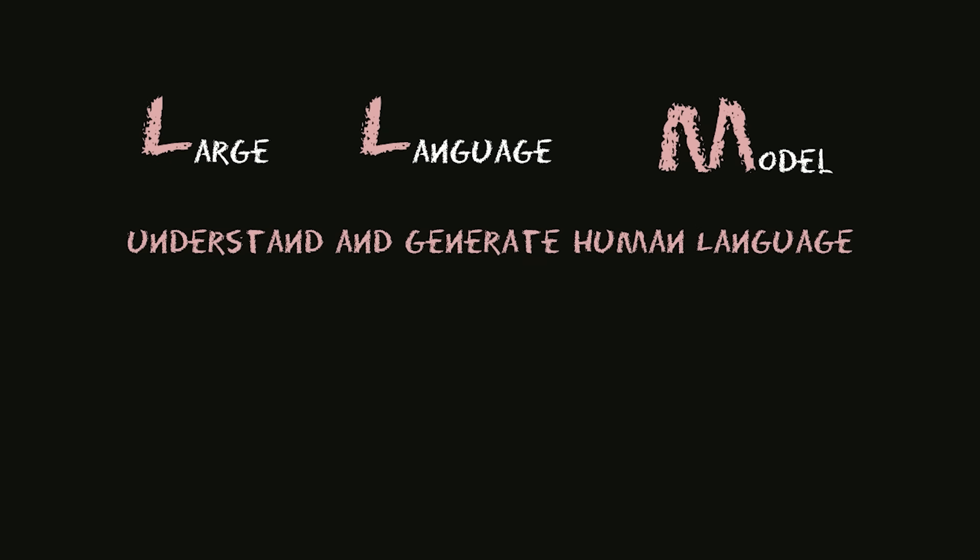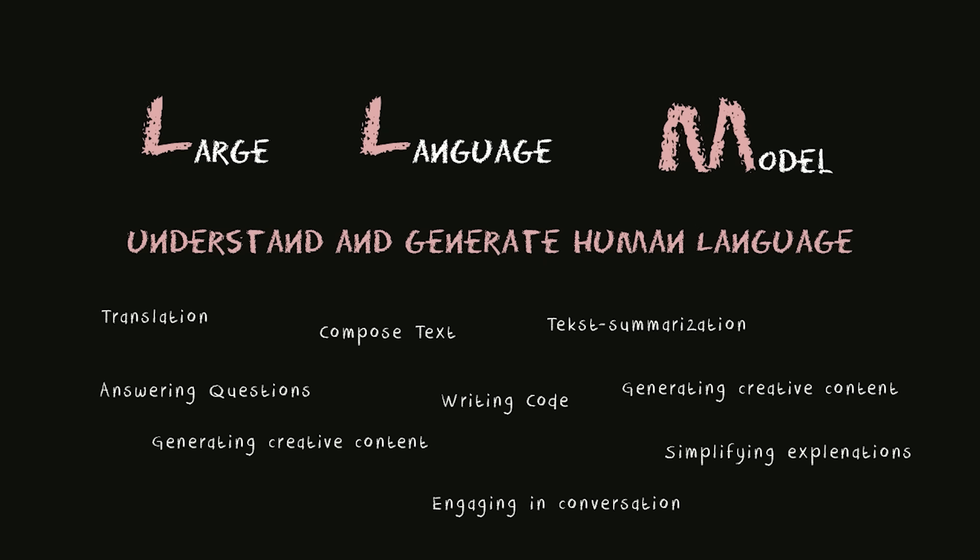So what are large language models, also known as LLMs? A large language model, or LLM, is a type of artificial intelligence model designed to understand and generate human language. It can execute tasks such as translating languages, composing text, answering questions, writing code, summarizing lengthy documents, generating creative content, providing simple explanations on difficult topics, and even engaging in human-like conversation.